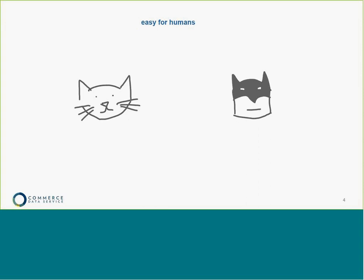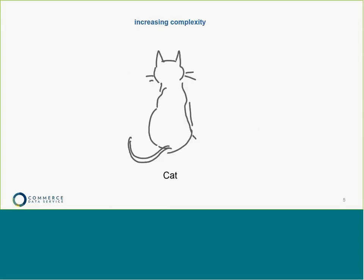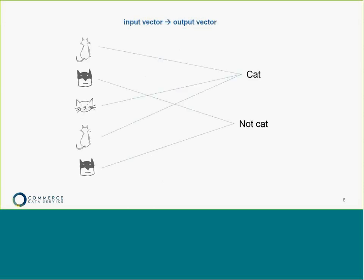An example of something really easy for humans to do is tell the difference between a cat and Batman. With a deep learning model, the functions have increasing complexity in the data. We have an input vector that corresponds in some way to an output vector. What we're trying to do is fit a function to a really high-dimensional set of input vectors, where X is our input — like images — and Y is the label, like whether this is a cat or not.